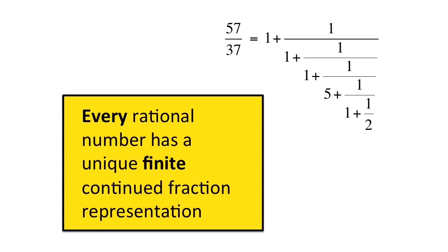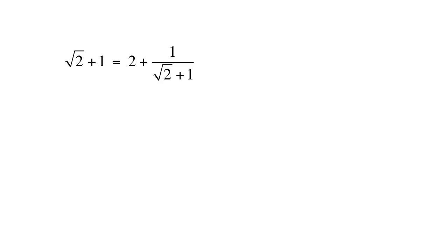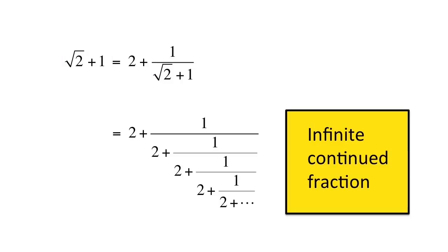Now let's start with this equation. Since root 2 plus 1 appears as both the left side and again in the denominator on the right, this means that root 2 plus 1 cannot have a finite representation, but actually goes on forever as this infinite continued fraction.